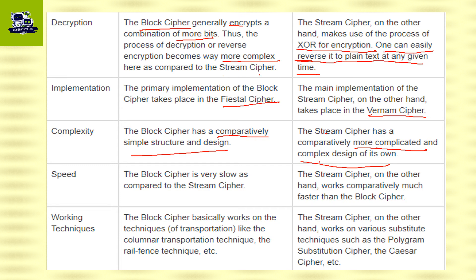Speed: block cipher is very slow as compared to stream cipher. Stream cipher works comparatively much faster than block cipher.